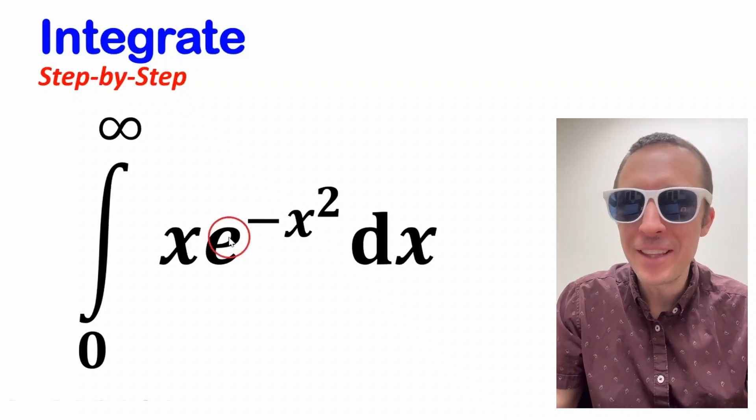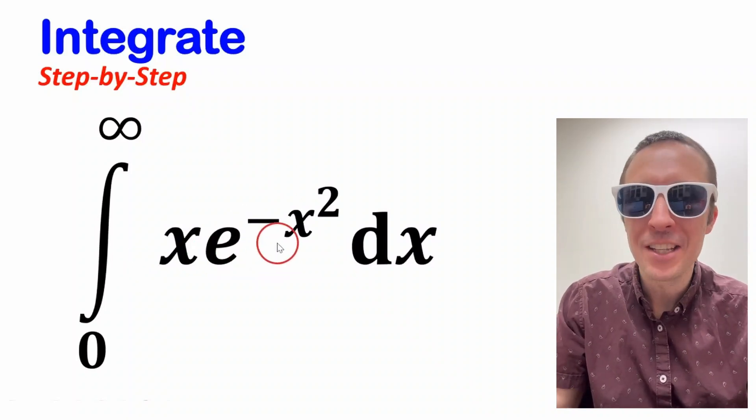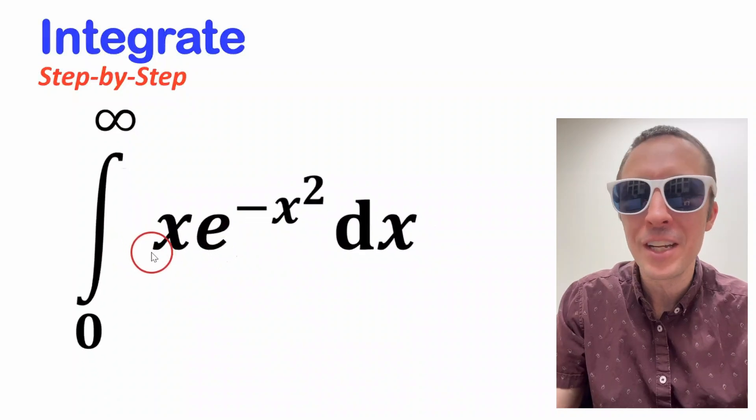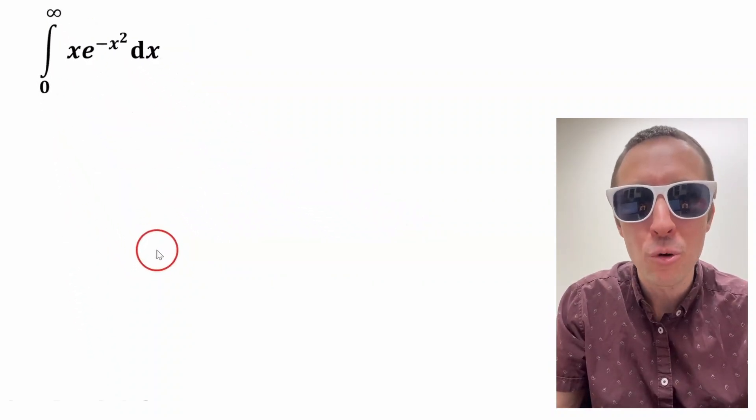My friends, we're going to evaluate the integral of x times e to the negative x squared from zero to infinity. It's going to be awesome. It's going to be super short.